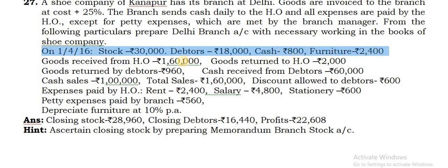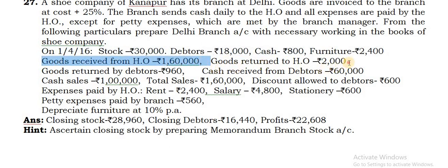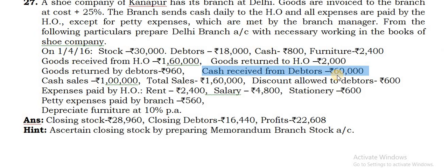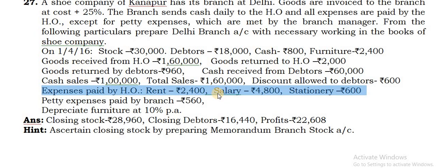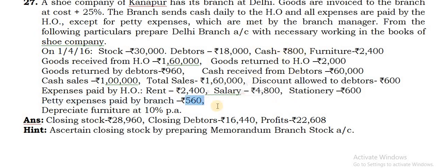Opening value of all assets you take on debit side. Goods received from head office on debit side, goods returned on credit side. Goods returned by debtors - credit side of debtors account. Cash received from debtors - two places: debtors account credit side as well as remittances credit side in branch account. Cash sales remittances - branch account credit side. Total sales: find the difference between the two, so 60,000 credit sales goes in debtors account debit side. Discount allowed to debtors on credit side. All expenses on debit side under bank account. Petty expenses: 800 minus 560 = balance 240 rupees as closing petty cash. Depreciate furniture: 2,400 minus 10%.